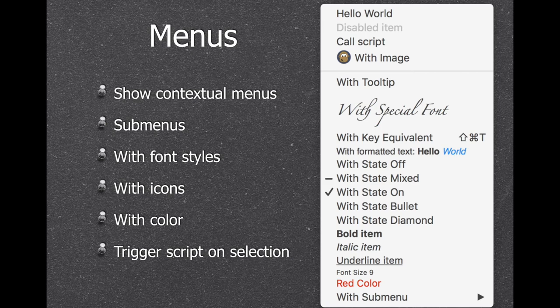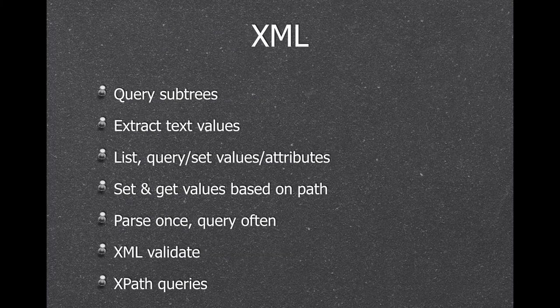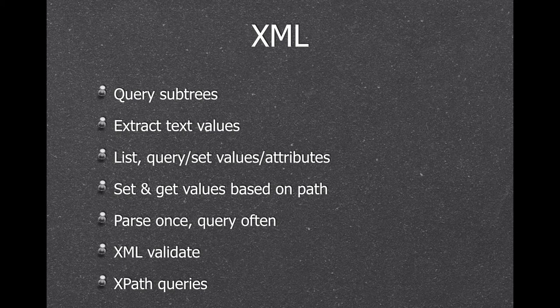The MBS plugin allows you to create custom context menus. You can build your own menu in code, add your formatting, check marks, sub-menus and color, and decide what to do on each menu entry — including triggering scripts or getting back the ID of the menu item selected. We have a lot of XML functions so you can query XML trees, extract text values, list values and attributes, change them, and set and get values based on a path. You can parse once and query often for better performance. We allow you to validate an XML file and run XPath queries against it to find the nodes you are interested in.